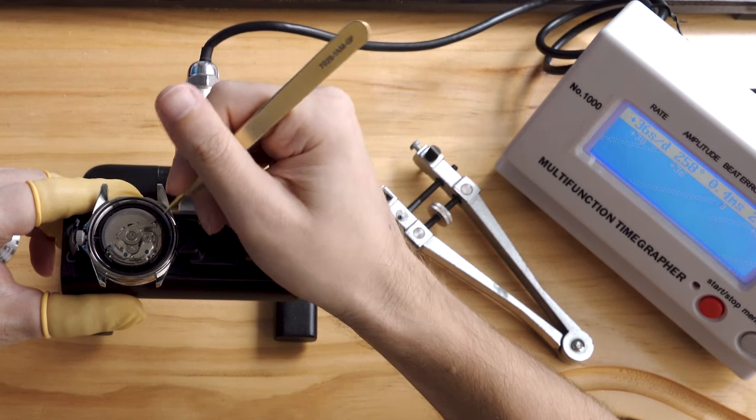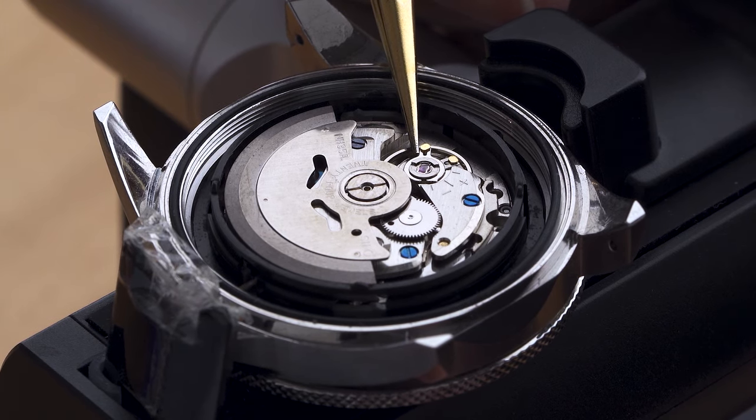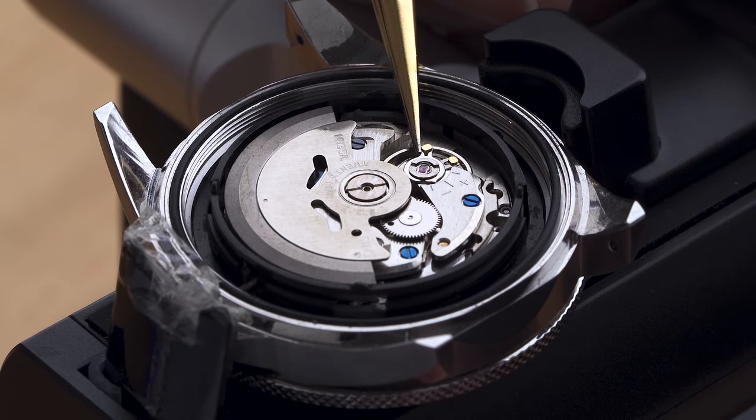With this watch, we want to slow it down. So we want to give the hairspring more length to oscillate. We'll nudge the regulator in this direction.